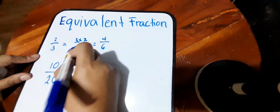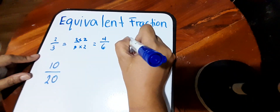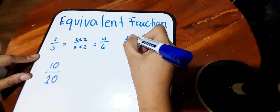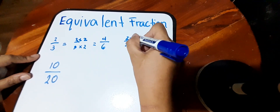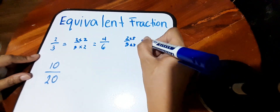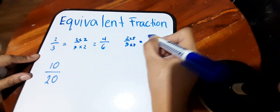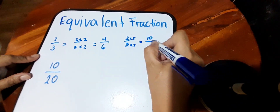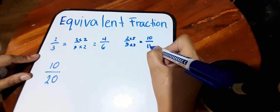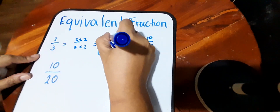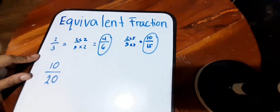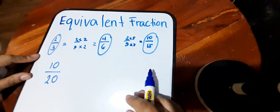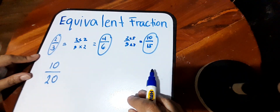We can also multiply two-thirds by five — times five on top and times five on the bottom. When we multiply, two times five is ten, and three times five will be fifteen. So four-sixths, ten-fifteenths, two-thirds — these are all equivalent fractions.